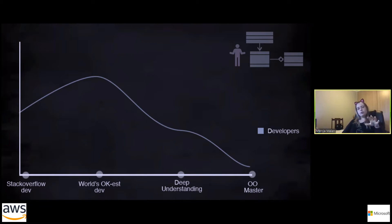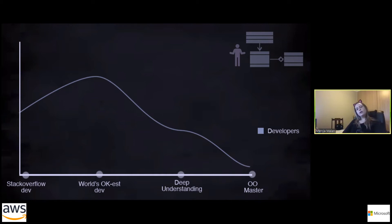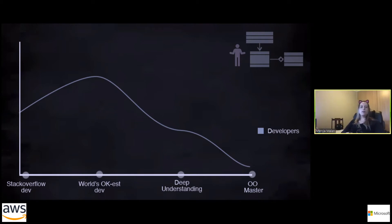Then you move into what I call the Worlds-OK dev — you have a good understanding of what you're doing but not necessarily a very deep understanding, and you can write the majority of your code without consulting additional resources. Further along, you get deep understanding: you understand how your compiler works, think about memory management and data structures. This allows you to solve more complex problems.